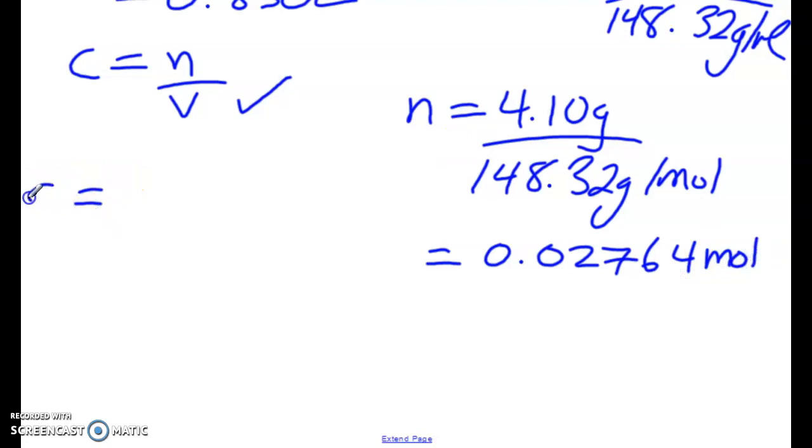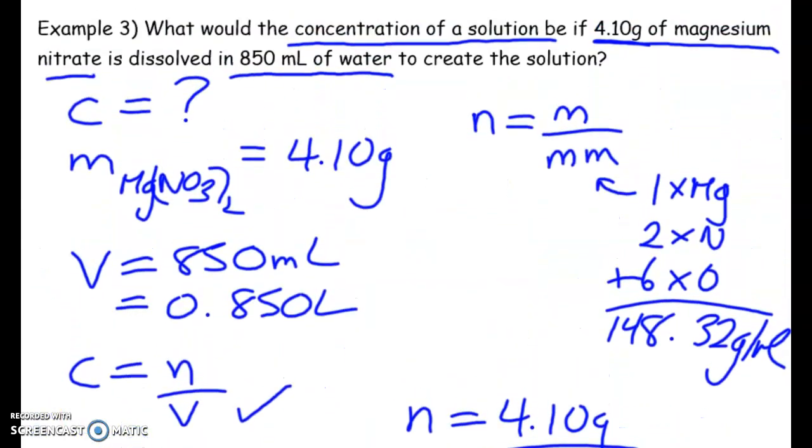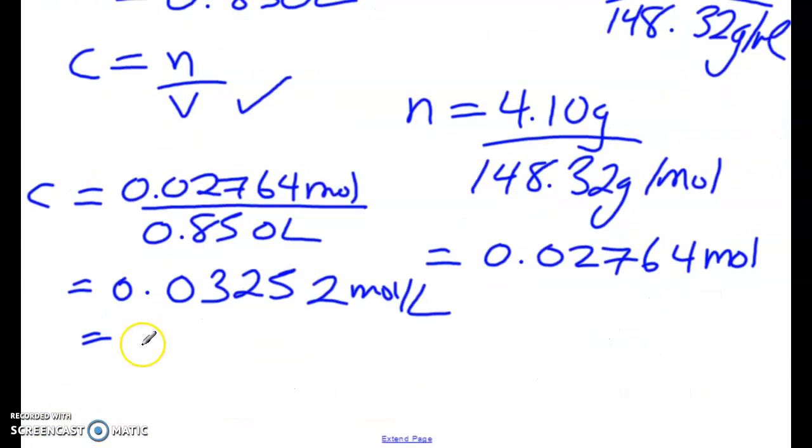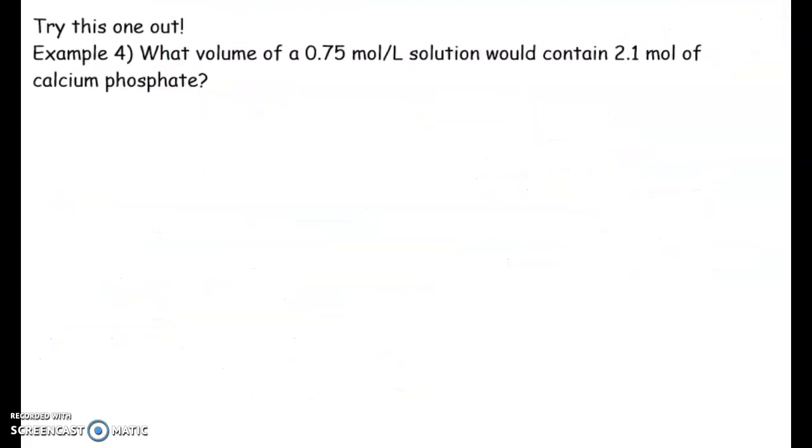And now we can plug into solve for concentration. So we're going to do moles divided by the volume, which was in liters, 0.850 liters. So we do that divided by this. So we get 0.03252 moles per liter. And actually for sig figs, we need two sig figs. So this ends up being 0.033 moles per liter. Right? Because after the 5, there are more numbers there. So this would round up to the 3.